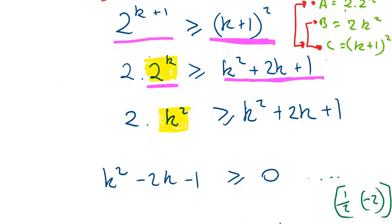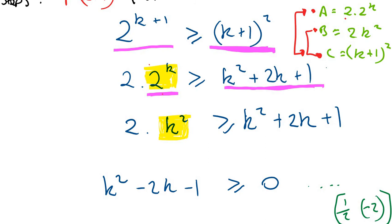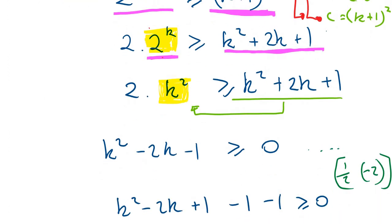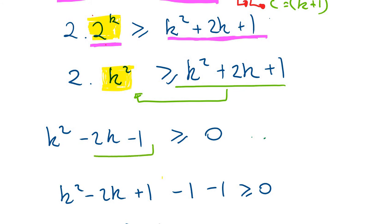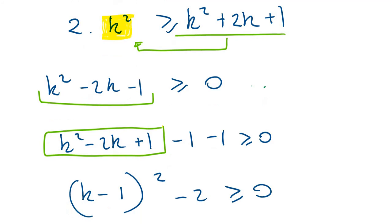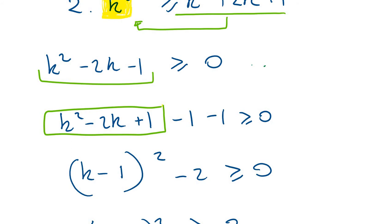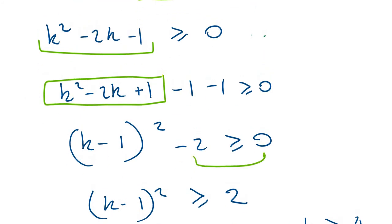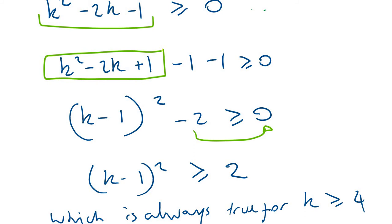Rearranging, I subtract the right-hand side and I'm left with 2k² - k² - 2k - 1 = k² - 2k - 1 > 0. I complete the square on this quadratic: halving the coefficient of k gives 1, so I add and subtract 1. This gives (k - 1)² - 2 > 0, meaning (k - 1)² ≥ 2, which is always true for k ≥ 4 as required.